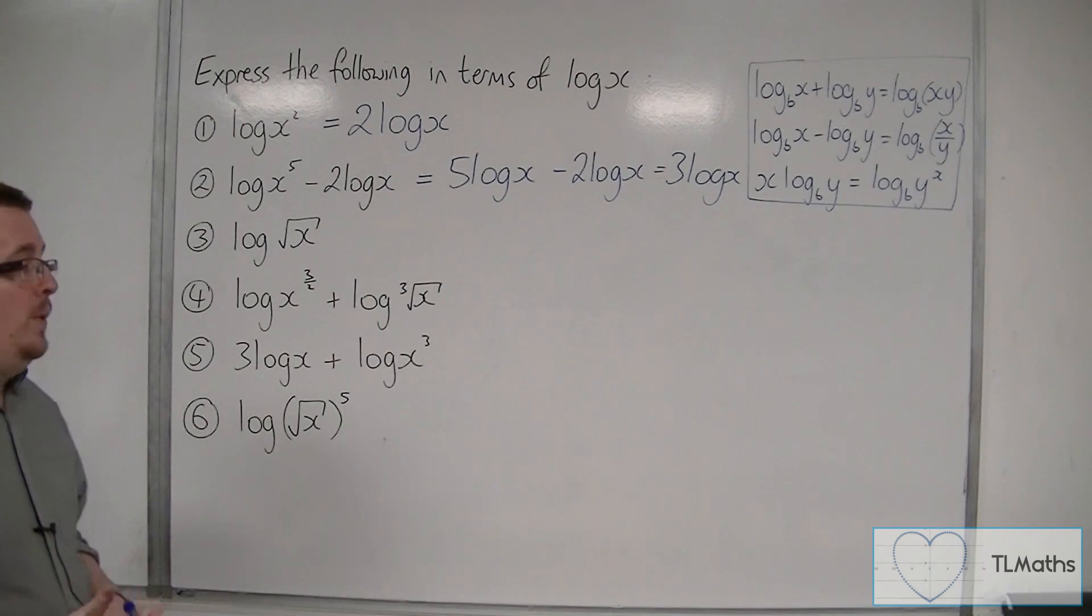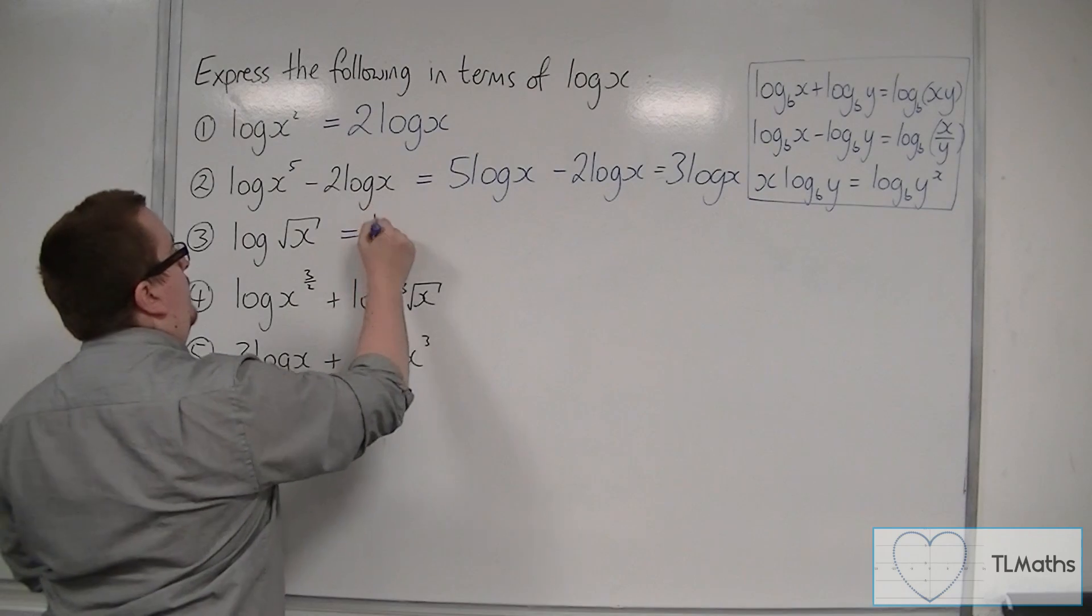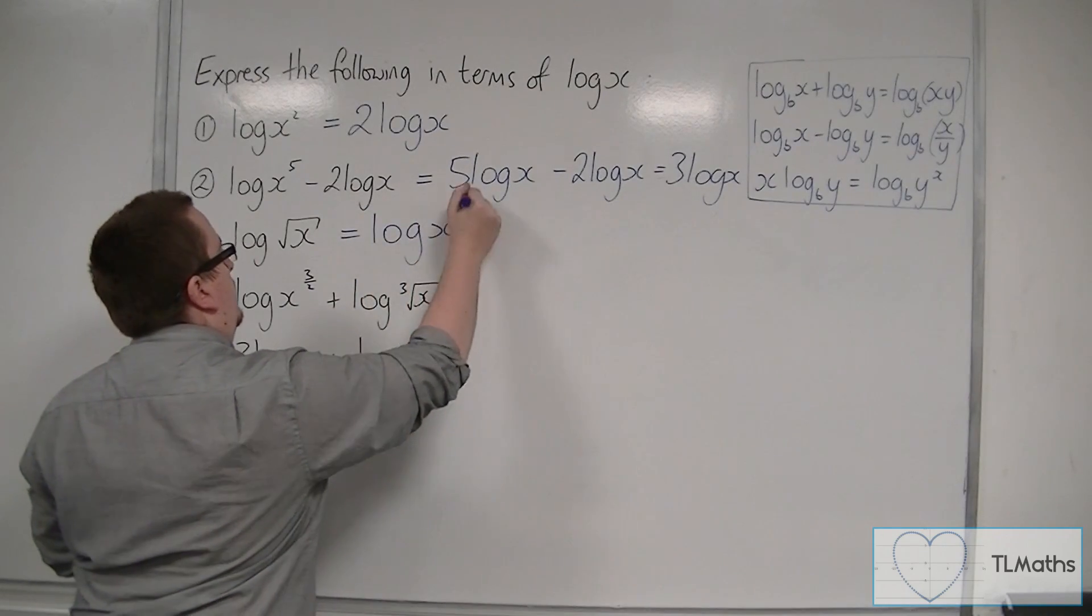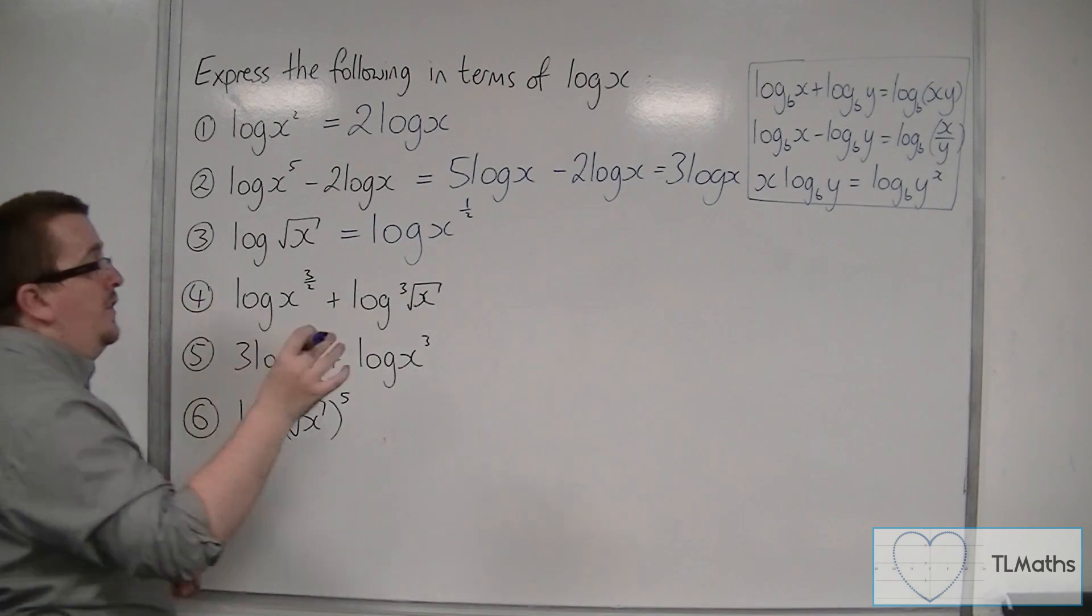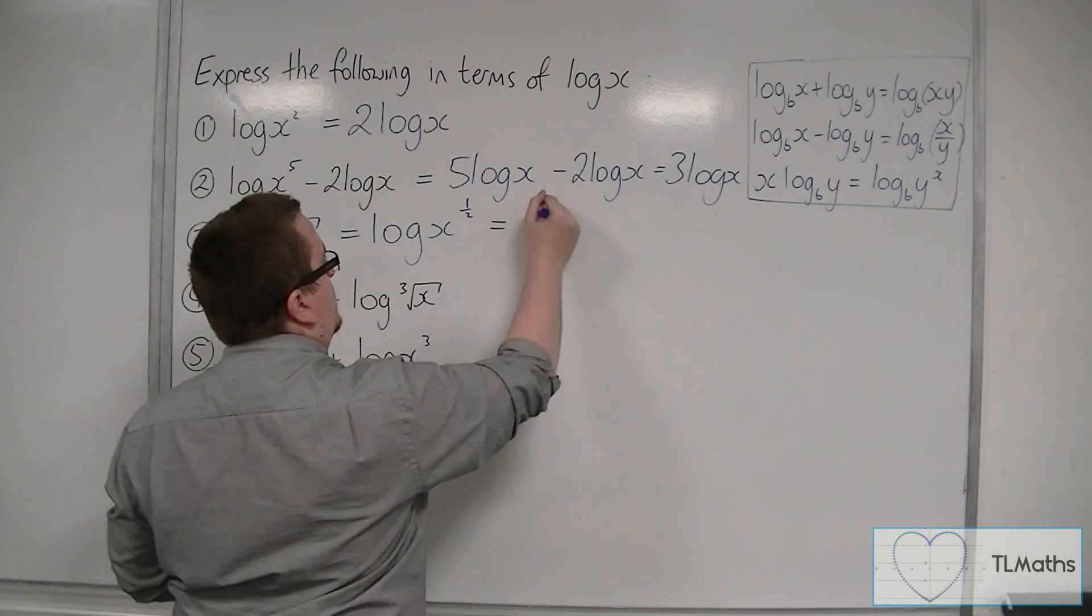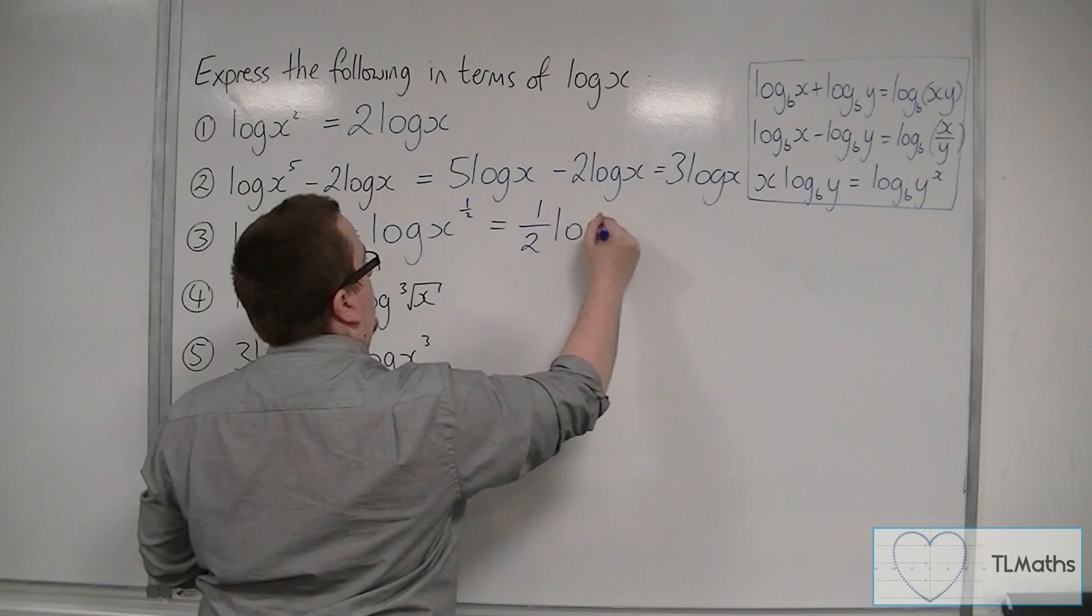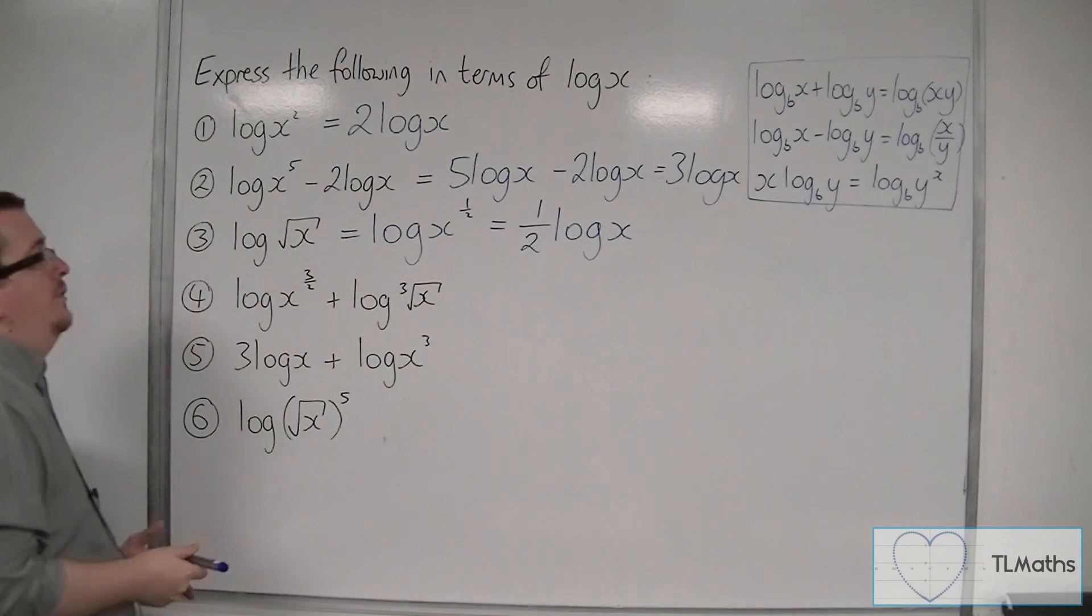Number three, log of the square root of x. The square root of x can be written as x to the half, using our indices knowledge. Then, using the third law, the half can come down to the front, and I'm left with a half log x.